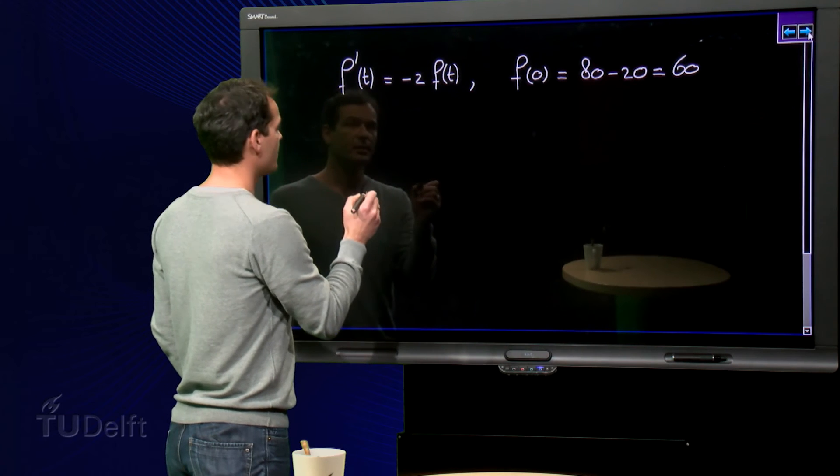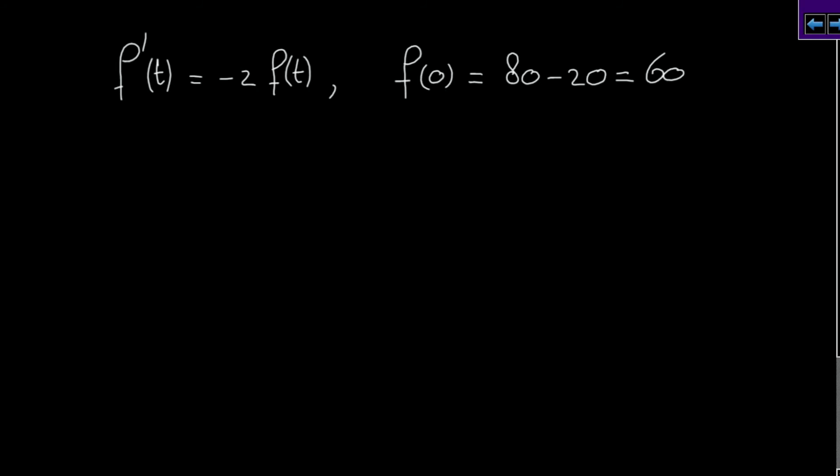So what do we get in this case? Well, we have f(t) is c times e to the power minus 2t. So f(0) must be 60, this is c times e to the power minus 2 times 0, which must equal 60.